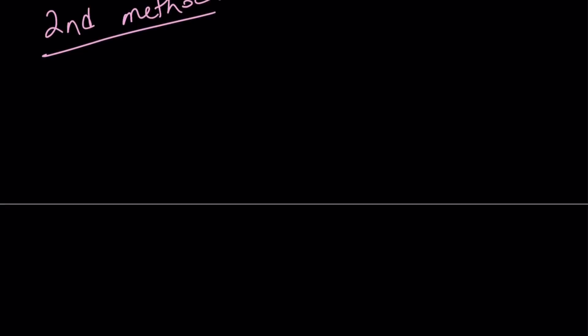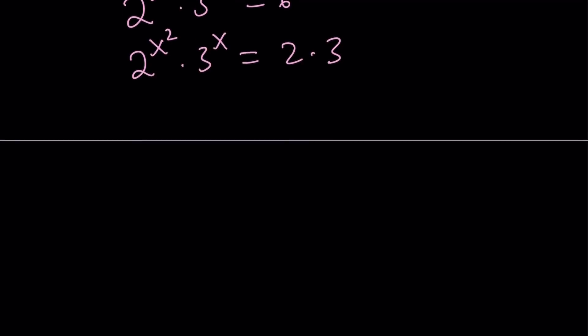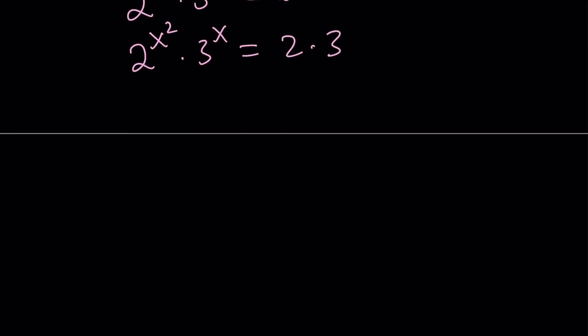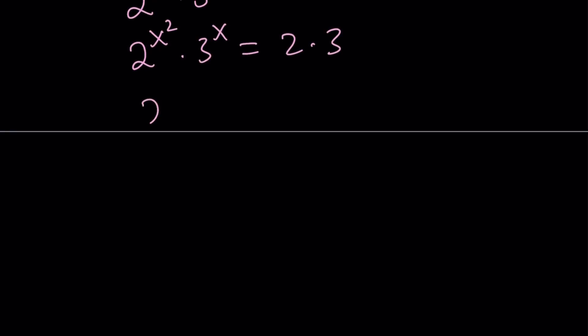Now let's talk about the second method. The first method uses logarithms and the second method uses properties of exponents. Let's write 6 as 2 times 3. I want to put the 2s on one side and the 3s on the other side. Let's write it as 2^(x²-1) = 3^(1-x), dividing by 2 and dividing by 3.